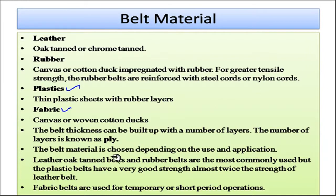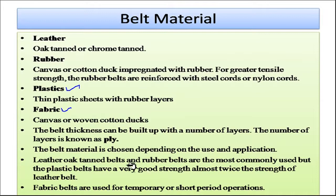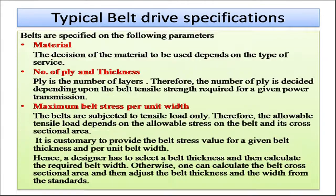The belt material is chosen depending upon the use and application. Leather oak-tanned belts and rubber belts are most commonly used, but plastic belts have very good strength — almost twice the strength of leather belts. Fabric belts are used for temporary or short-period applications. Now we will see some typical belt specifications.